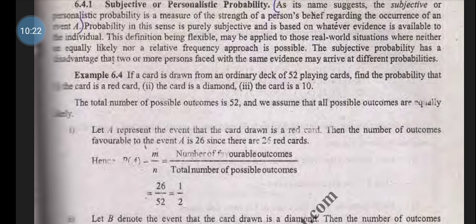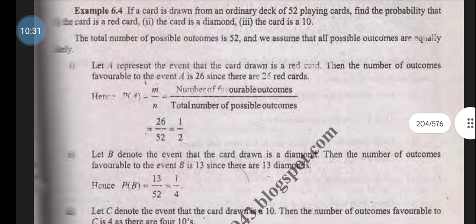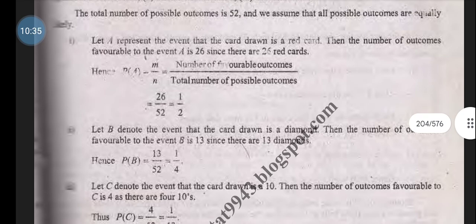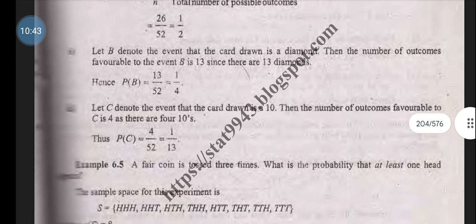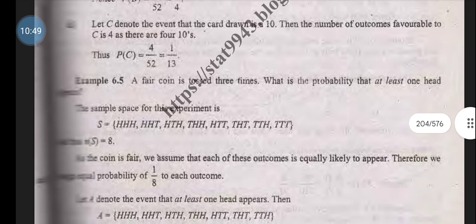Example: A card is drawn from an ordinary deck of 52 playing cards. Find the probability that: (a) the card is red. Number of favorable outcomes over total number of possible outcomes equals 26/52 equals 1/2. (b) The drawn card is a diamond: P(B) equals 13/52 equals 1/4. (c) The card drawn is a 10: 4/52.